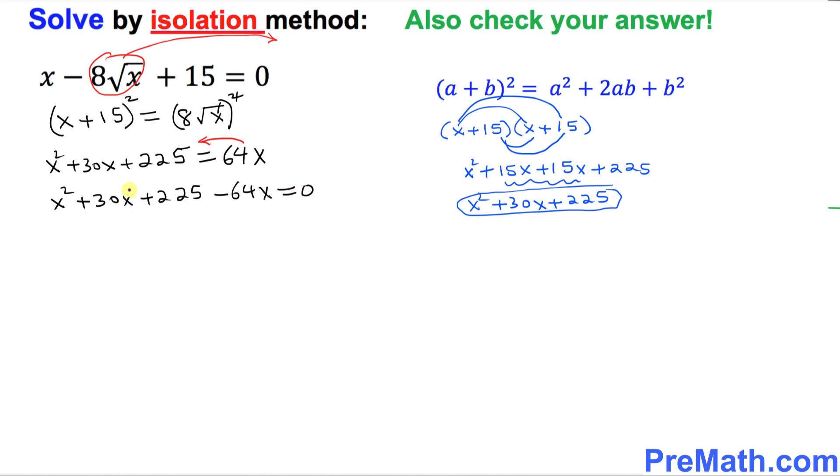Let's combine the like terms. So we're going to combine these one. So I'm going to say x square minus 34x plus 225 equal to 0. So you can see this is a quadratic equation. We can easily factor this one out.